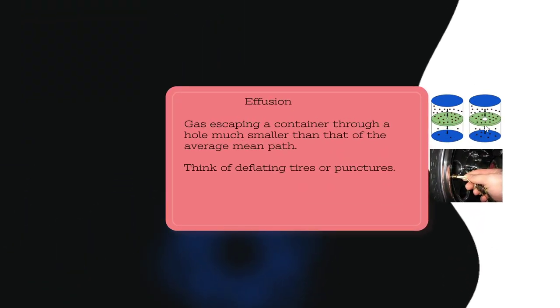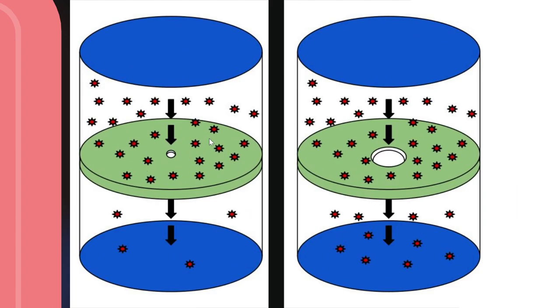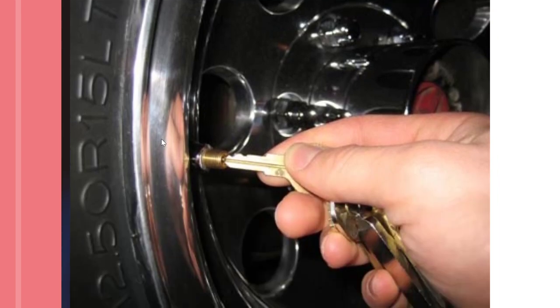Effusion is slightly different — effusion requires the gas to escape not through a large volume but through a very small opening. The easy way to think about it is a deflating tire or a puncture. The diagram here shows a scenario where there is a tiny hole and the gas has to exit through that tiny hole. Another example is deflating a car tire through its valve — that's an example of effusion at work.